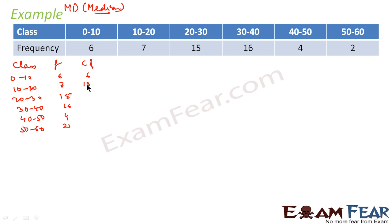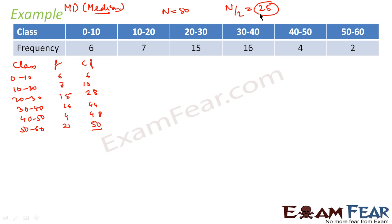Now we compute the cumulative frequency: 6, then 6+7=13, 13+15=28, 28+16=44, 44+4=48, and 48+2=50. So n = 50. Since n = 50, we find n/2 = 25. Note: for this median formula, regardless of whether n is even or odd, we simply find n/2 and locate the class containing that value.